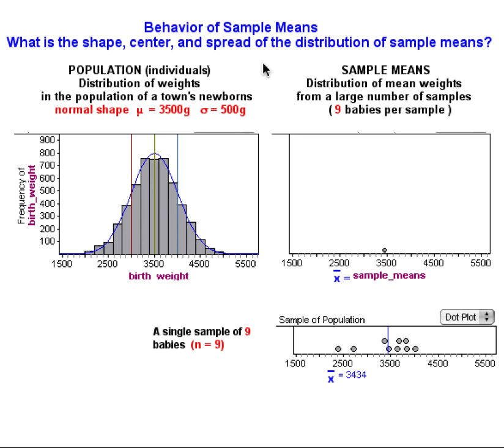To investigate this question, we're going to return to the familiar context of the previous example and look at individual newborns in a town. We're interested in the distribution of their weights. I've assumed that weights for individual babies are normally distributed with the mean of 3,500 grams and a standard deviation of 500 grams.